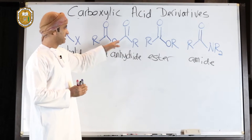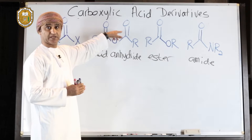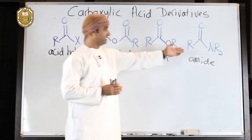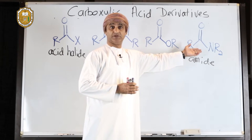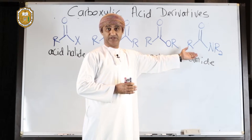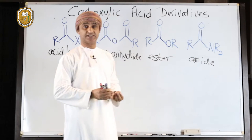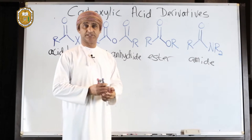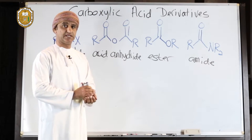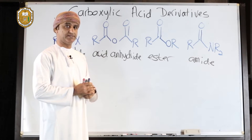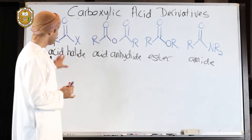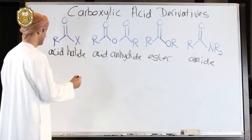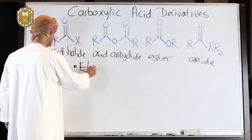The presence of another carbonyl group in anhydrides makes a difference in reactivity. Nitrogen is the least electronegative atom among these, and while it does pull electrons toward itself, it is a much better electron donor relative to oxygen because it is less electronegative. Therefore, electrophilicity is a very important issue in comparing these derivatives.